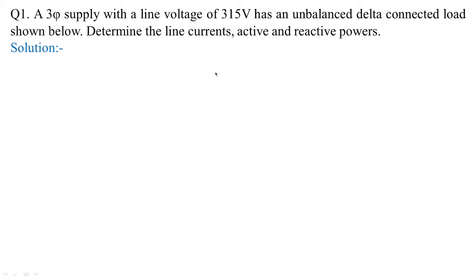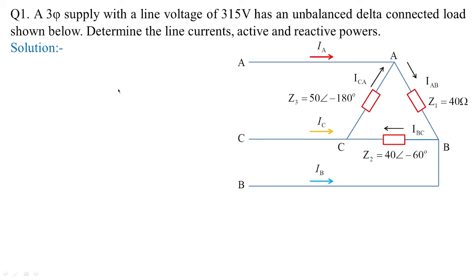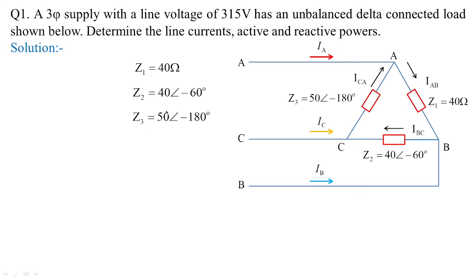Now, for the delta type of unbalanced load problem: a three-phase supply with line voltage of 315 volts has an unbalanced delta connected load as shown. We have to determine the line currents and the active and reactive power. The connection sequence is A, C, B for this unbalanced delta load. The impedance values are: Z1 equals 40 ohms, Z2 equals 48 at angle minus 60 degrees, and Z3 equals 58 at angle minus 180 degrees.